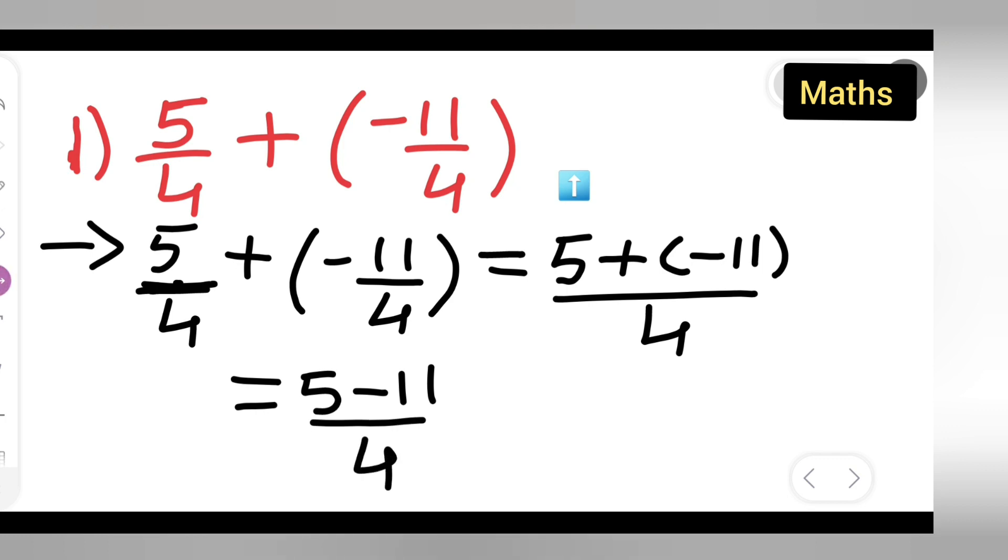Because plus and minus will be minus. So 5 minus 11 will be -6, taking the sign of the bigger number. -6/4. Simplifying: 2 times 2 is 4, 2 times 3 is 6, so your answer will be -3/2.